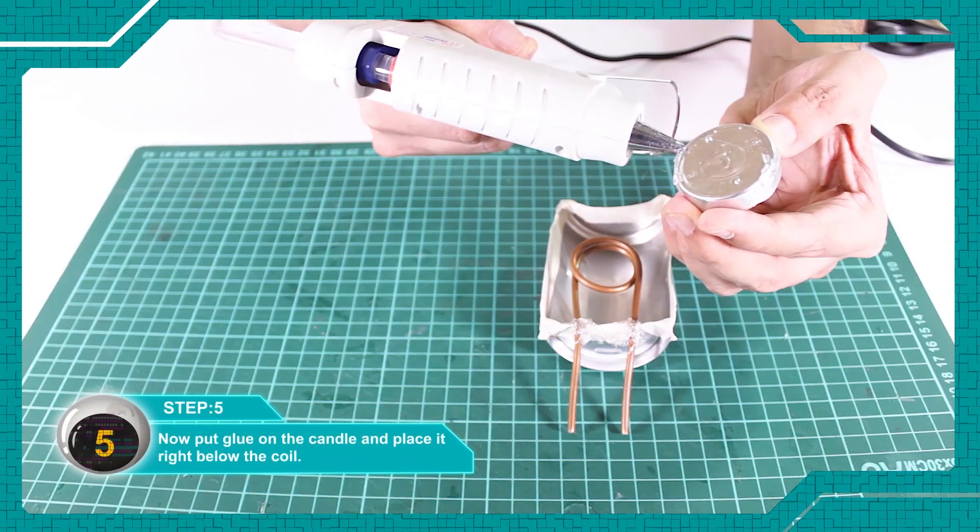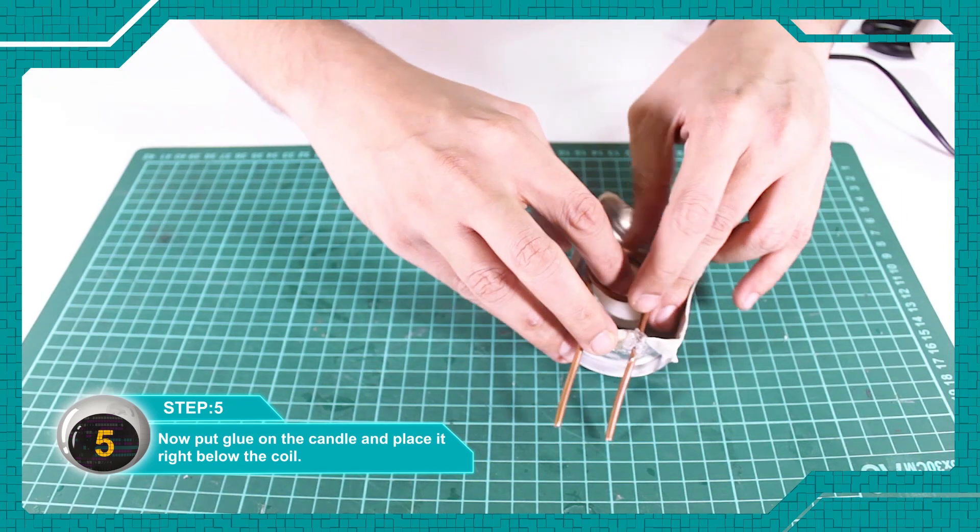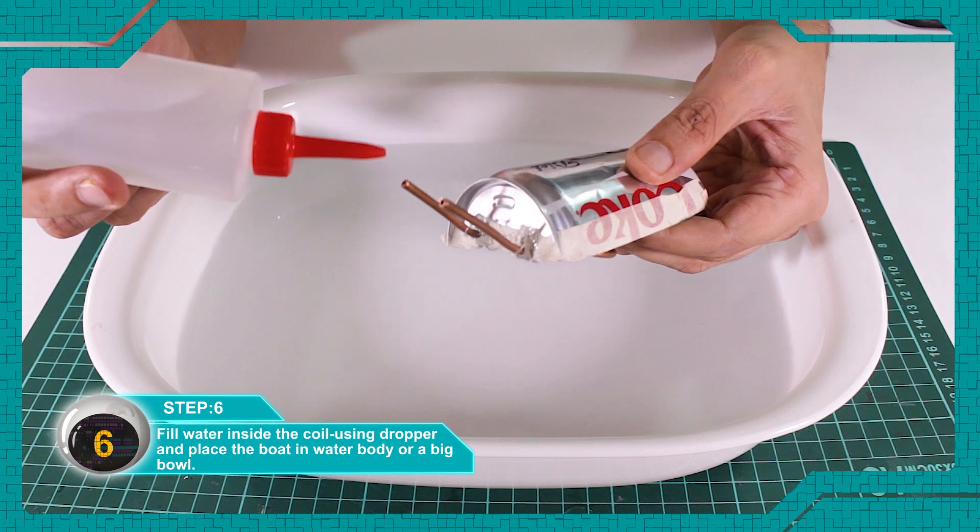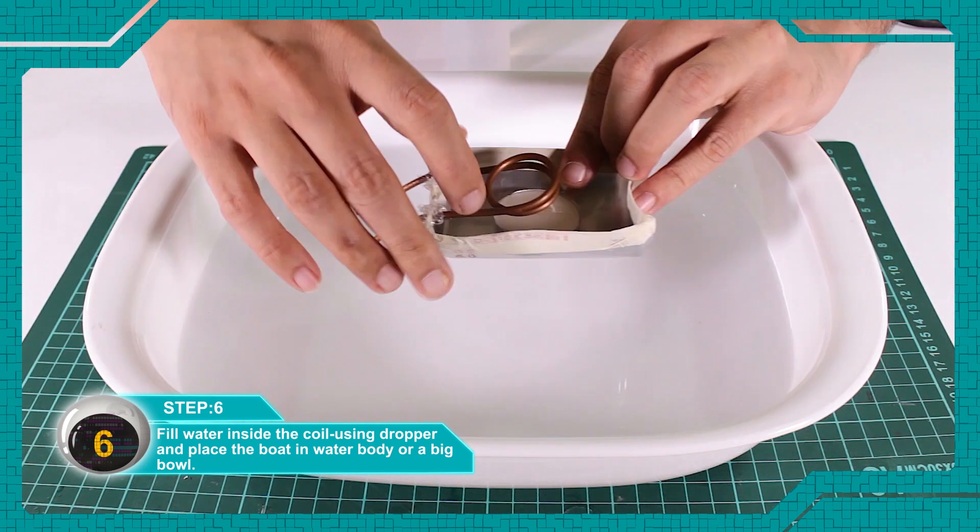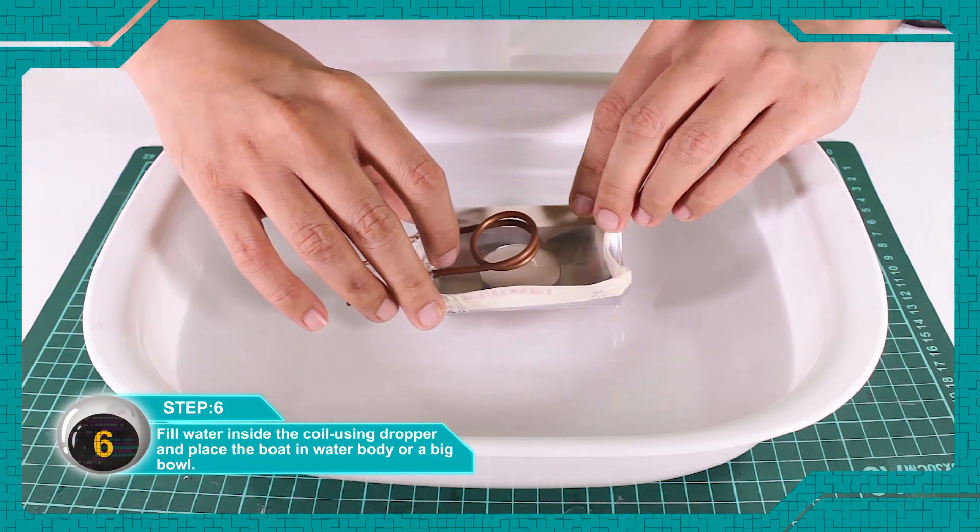Apply glue to the candle and place it below the coil. Fill a little water inside the coil with the help of a dropper and place the boat in a large bowl, swimming pool, river, or water body.